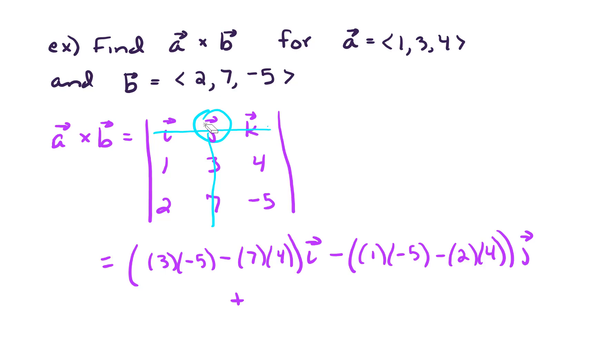For K, after removing row 1, column 3, we have a little 2 by 2. The determinant there would be 1 times 7 minus 2 times 3, all times K. And let's clean this up. For I, let's see, we're going to have negative 15 minus 28. And that gives us negative 43I. Next,